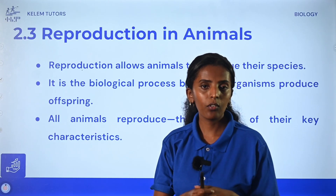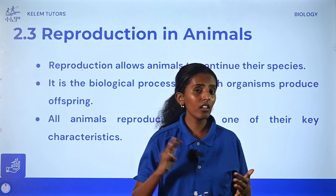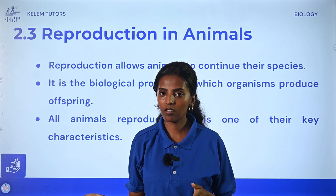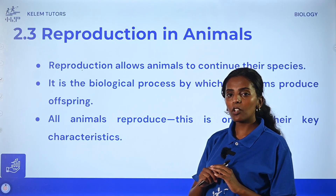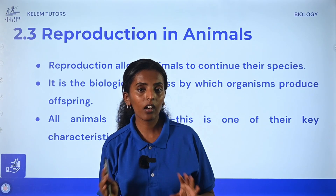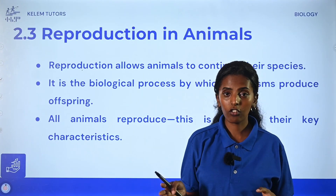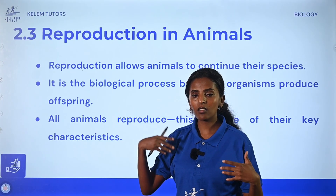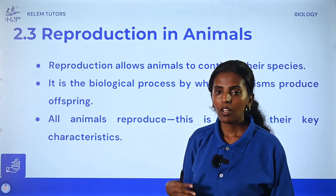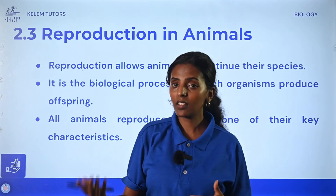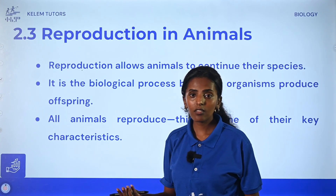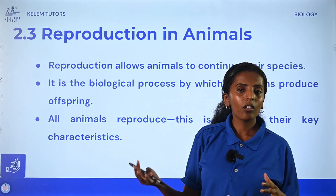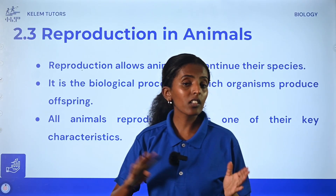Okay, so last time, if you remember, we covered vertebrates and invertebrates, which is about reproduction in animals. One of the characteristics of animals is reproduction — their ability to reproduce, which is the producing of offspring. There are two ways: sexual and asexual reproduction, not just in animals but in different organisms.